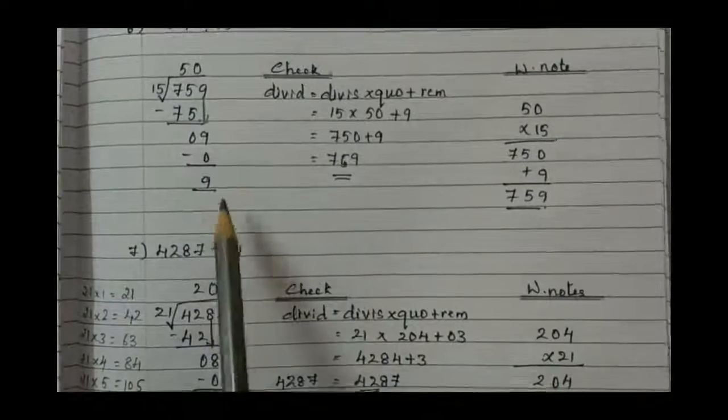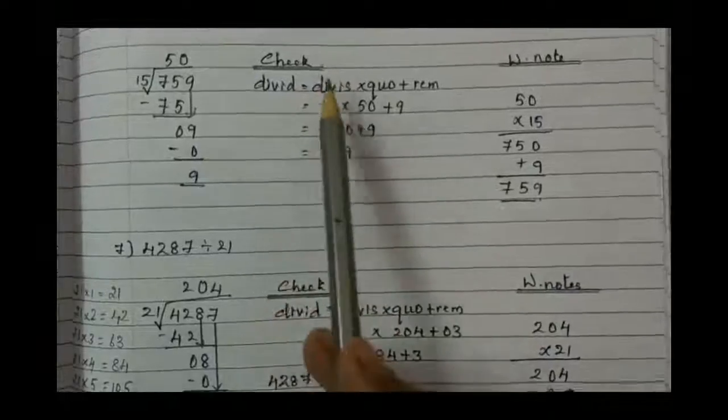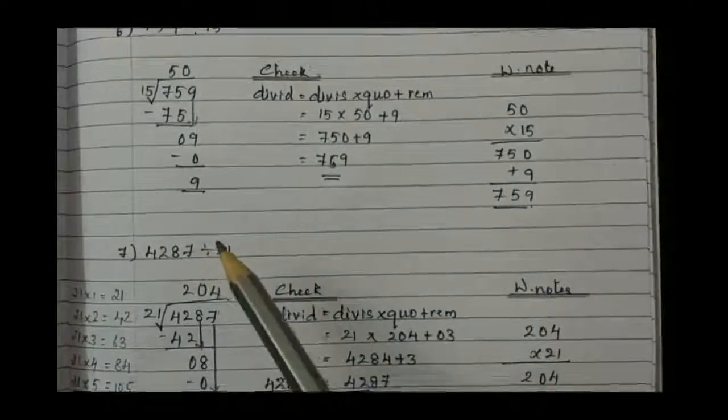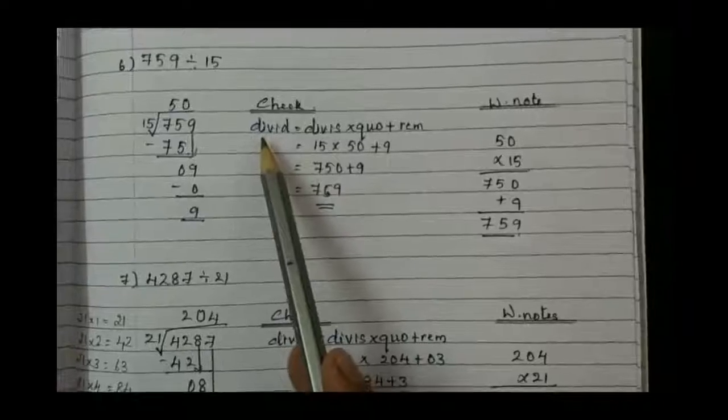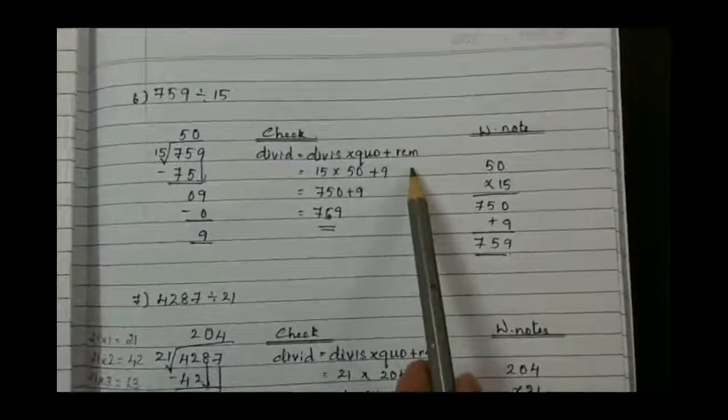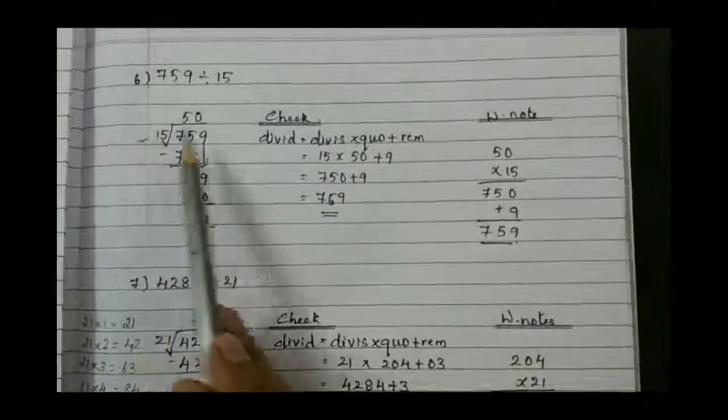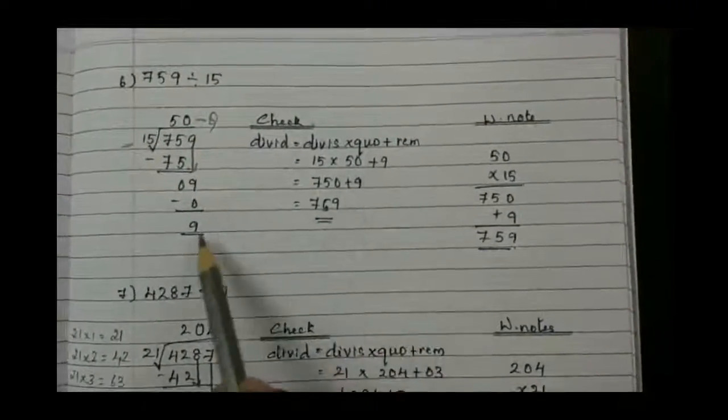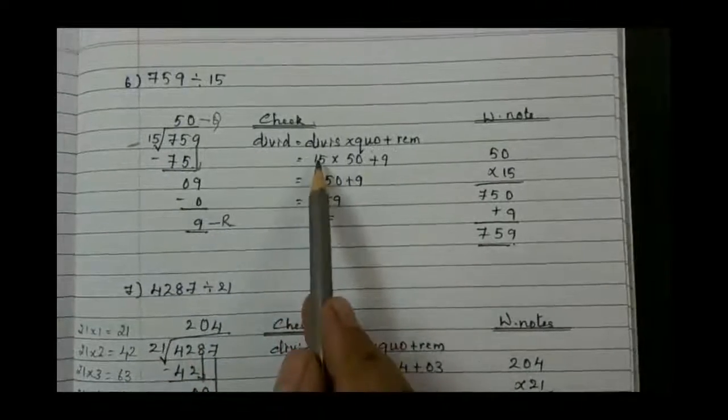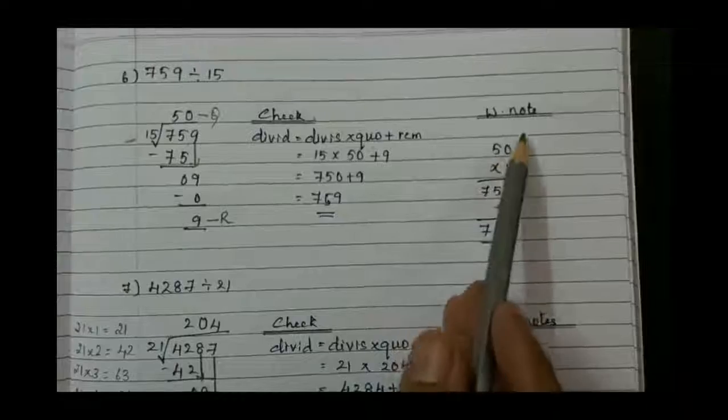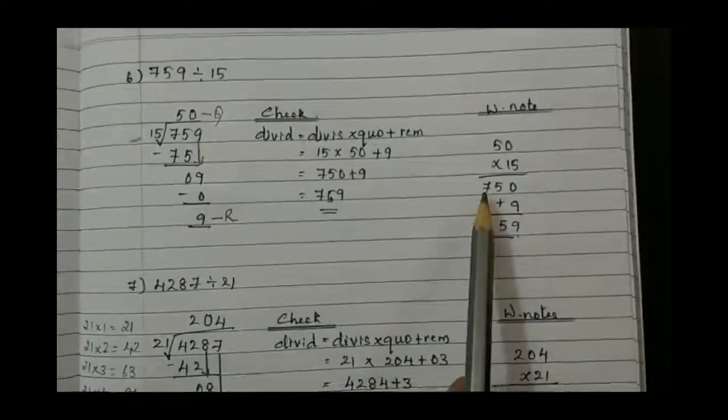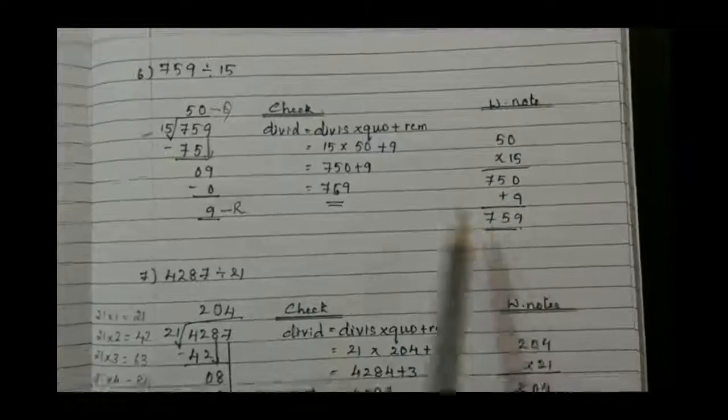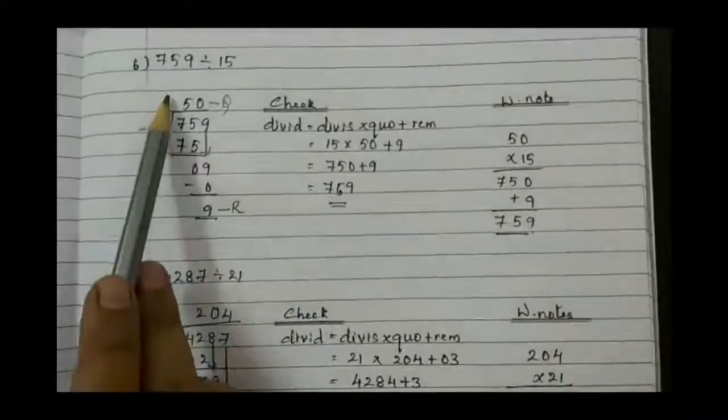Write down the formula to check whether you have divided properly or not by cross verification. Dividend equals divisor into quotient plus remainder. Divisor is 15, quotient is 50, plus remainder 9. So write down 15 into 50 plus 9. Go for the working note: 15 into 50 equals 750, then add the remainder 9. If you add, it becomes 759, similar to dividend. That means our quotient is right.